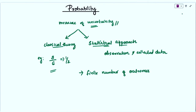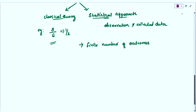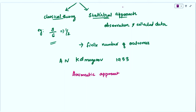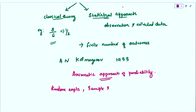Thus, another theory of probability was developed by a mathematician called A.N. Kolmogorov in 1963, who defined a new branch of probability called the Axiomatic Approach of Probability, in which we can find infinite number of outcomes. To understand this approach, we must know about two basic terms: random experiments and sample space.